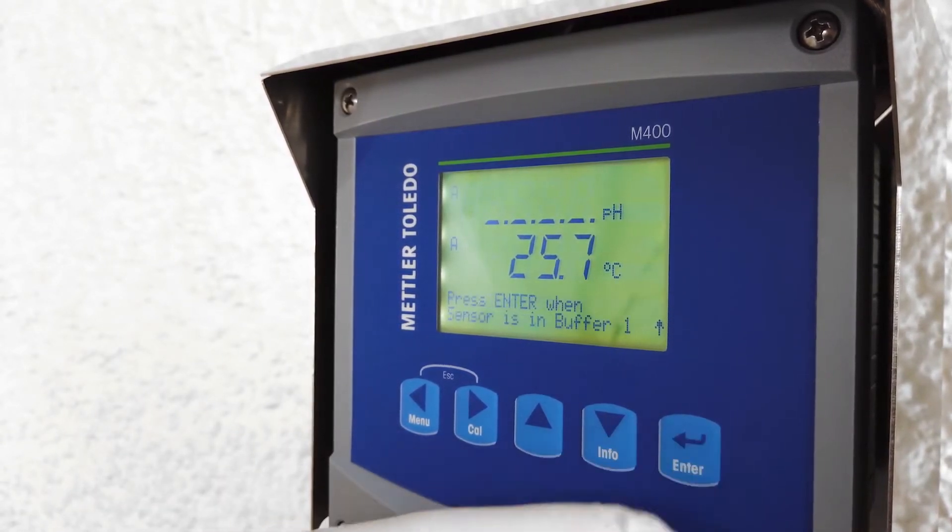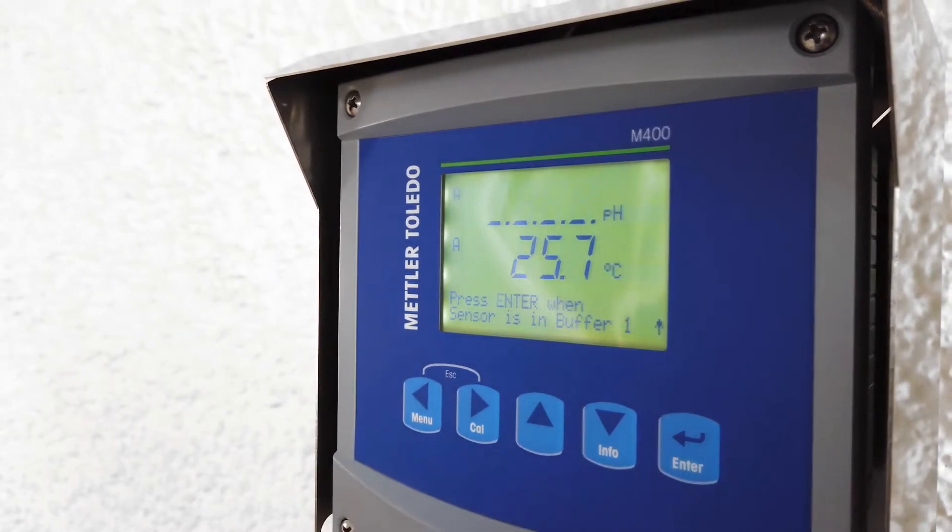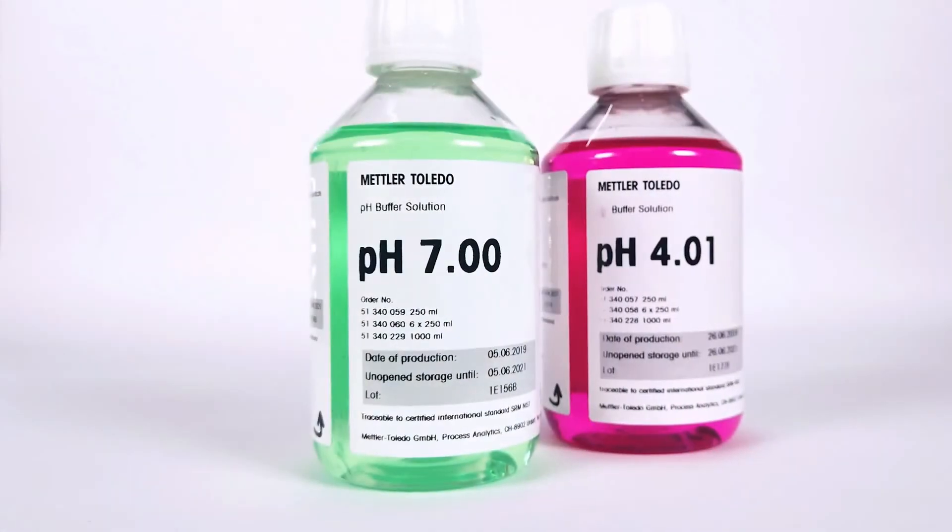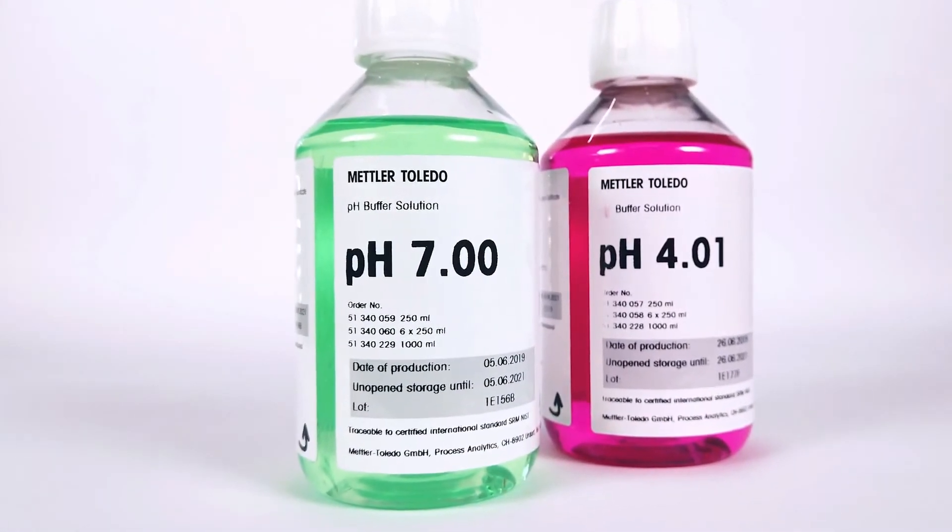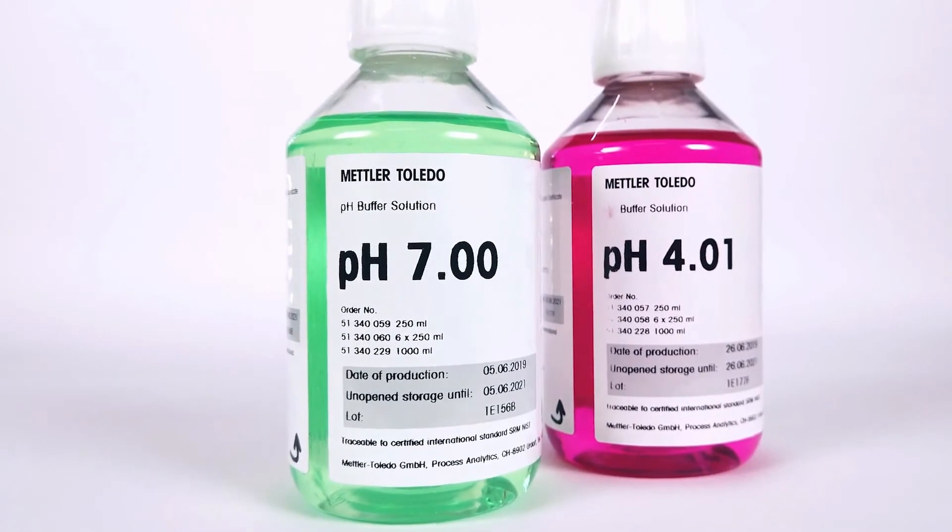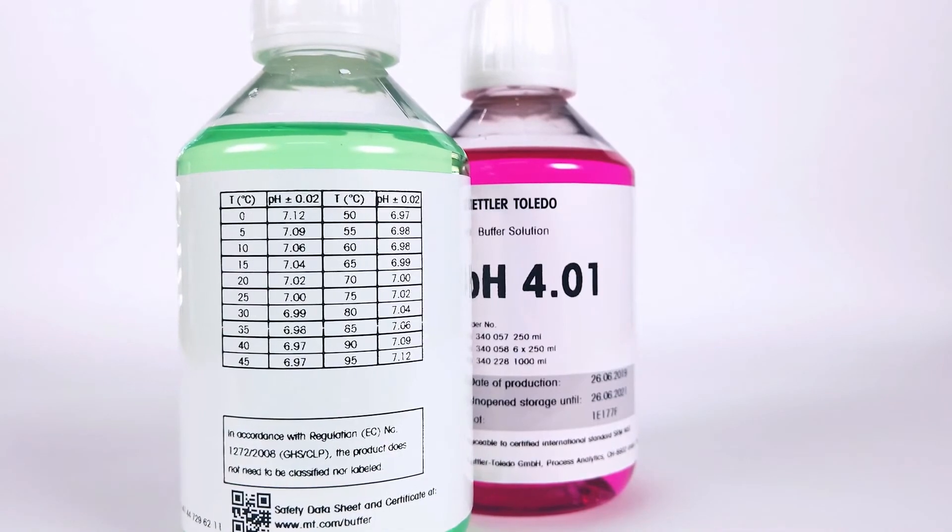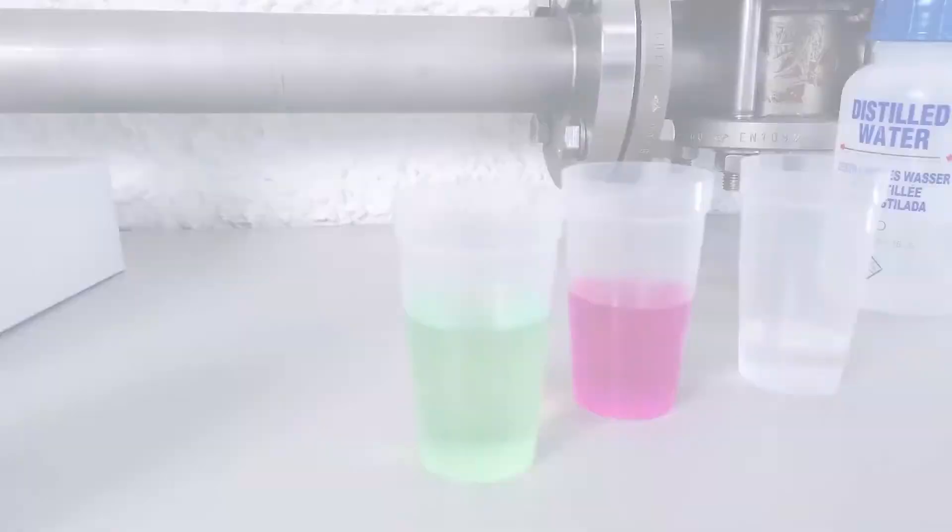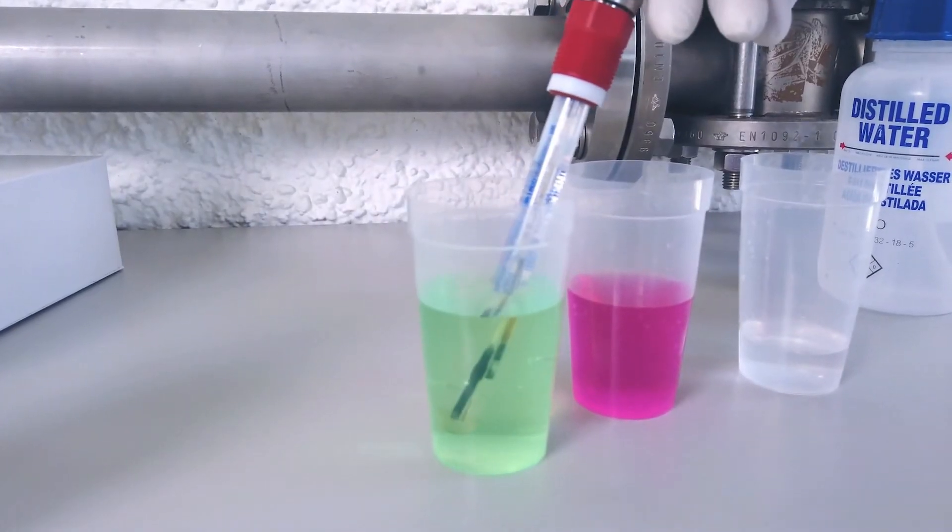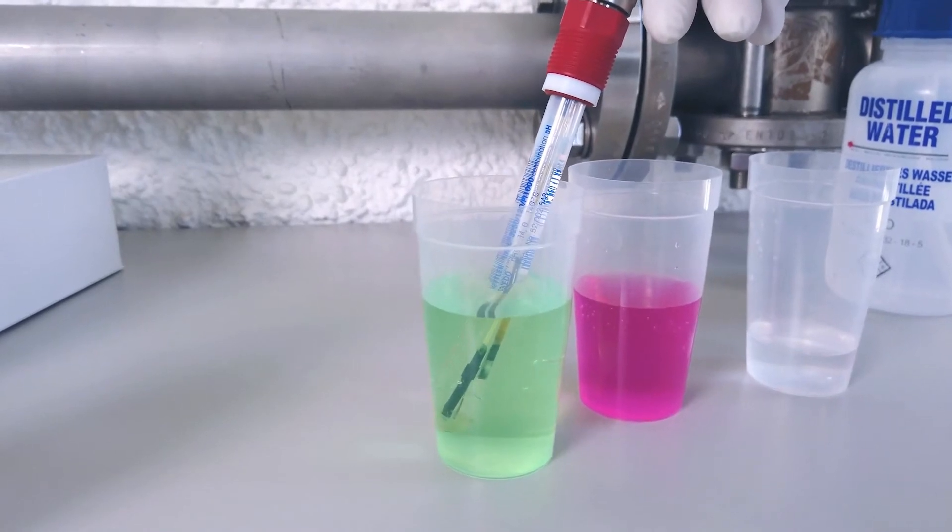The transmitter display indicates that the sensor should be put in the first buffer. Mettler Toledo transmitters can automatically detect buffers as they have a Mettler Toledo buffer table preset on them. Use pH 7 or pH 4 first, the transmitter will automatically detect which one it is. In this case, we're using pH 7 buffer first.